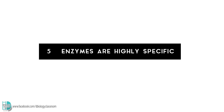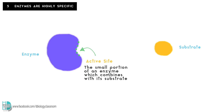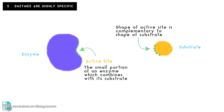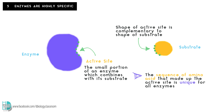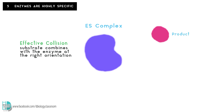Number 5, enzymes are highly specific. The small portion of an enzyme which combines with its substrate is called an active site. It is complementary to the shape of its substrate. The sequence of amino acids that make up the active site is unique for all enzymes, making them highly specific. When the substrate combines with the enzyme at the right orientation, known as effective collision, an enzyme-substrate complex is formed, the reaction occurs, and the product is released. The active site is then free to combine with another substrate.